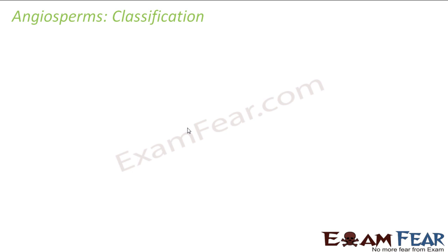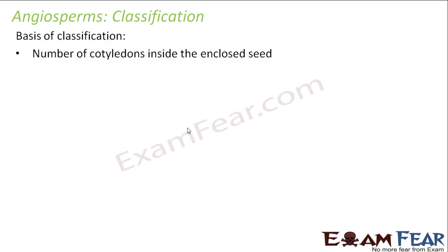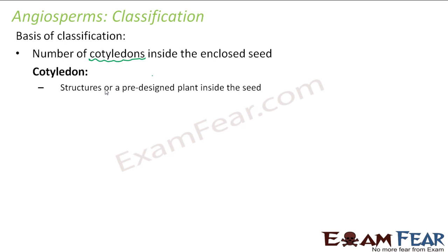Let us now talk about the classification of angiosperms. These flowering plants, where seeds are enclosed inside fruits, are classified into two types based on the structure inside the seed — specifically, the number of cotyledons inside the enclosed seed. Cotyledons are nothing but the seed leaves. Inside the seed, you have leaf-like structures — these represent a pre-designed plant inside a seed. When you provide water, light, and everything needed, that seed grows into a plant. That very small leaf-like structure inside the seed is known as a cotyledon.